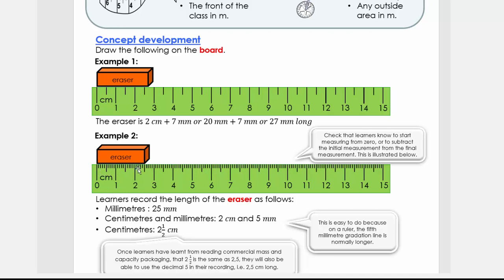Where we measure 25 millimeters. So if we write it in centimeters and millimeters, this 20 millimeters will then be two centimeters and five millimeters. Now the five millimeters, we can write it then as two and a half. This is easy to do because on a ruler the fifth millimeter gradation line is normally longer.